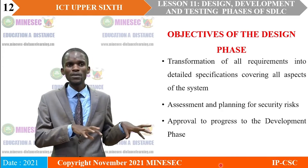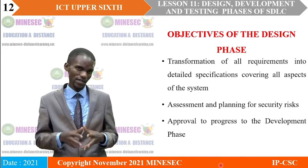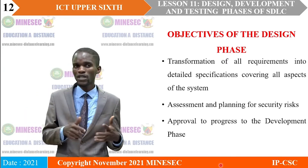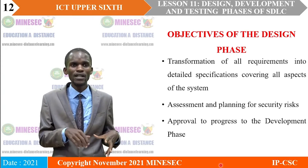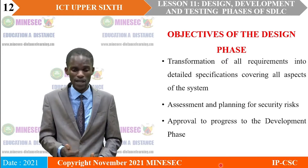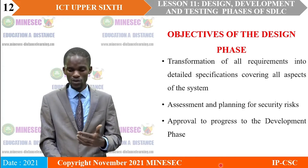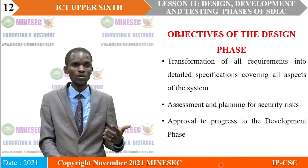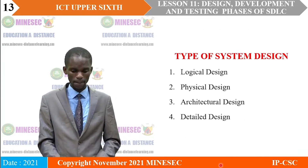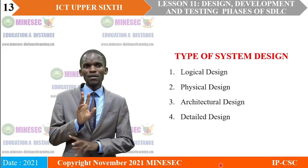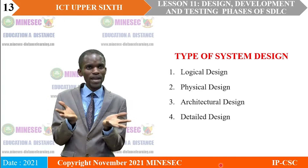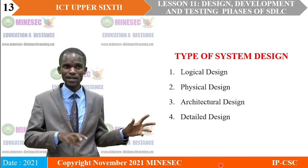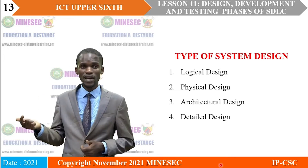System design also helps in the assessment and planning for security risks. It also helps in the approval of the progress made so far in the development, which leads to the development phase of the system. Here you look at things like reviewing the project plan and laying out testing plans. Below are some types of system design: we have logical design, physical design, architectural design, and detailed design.